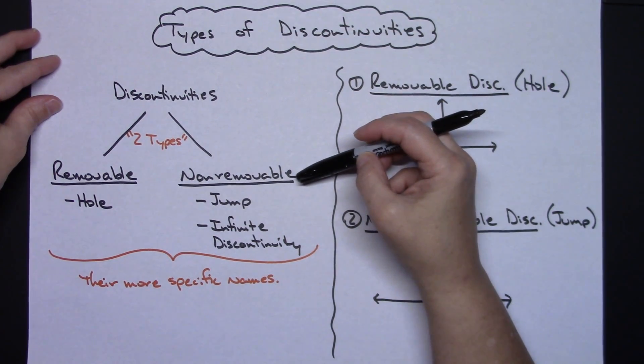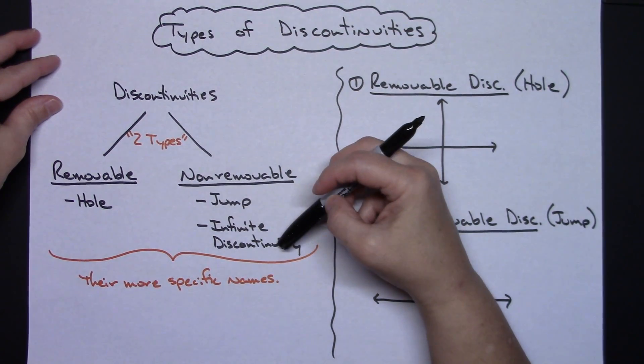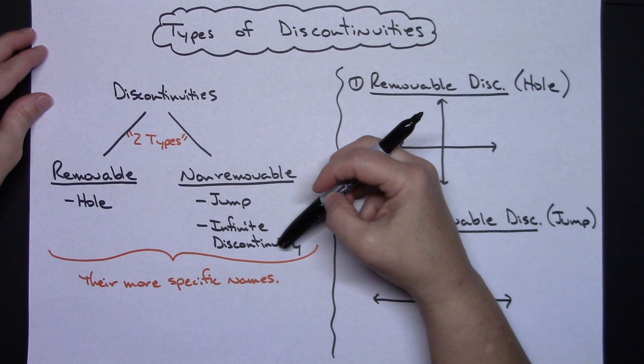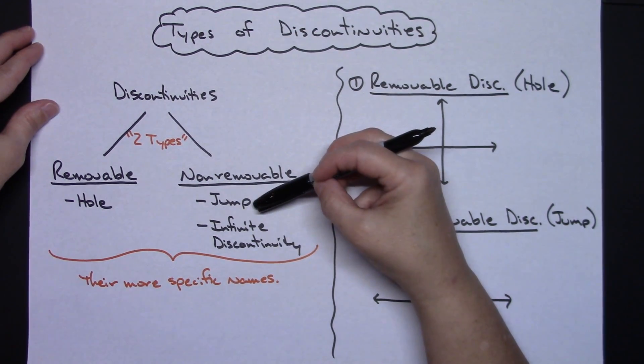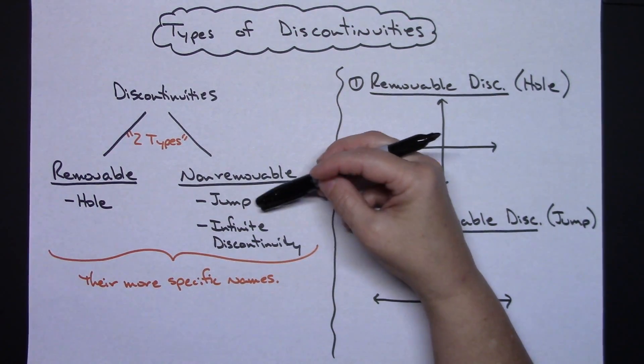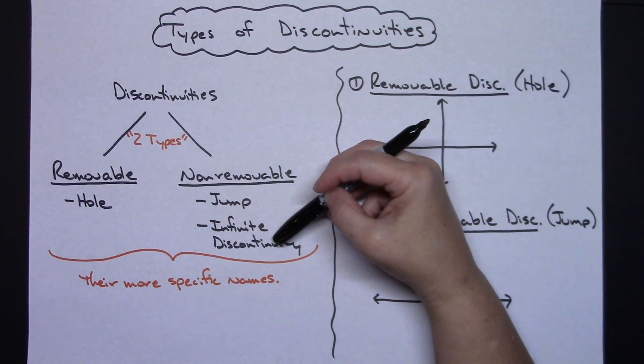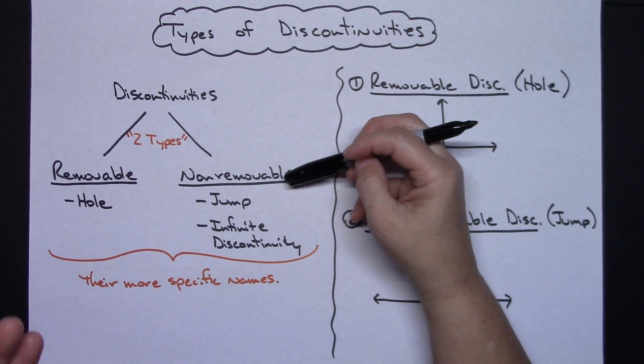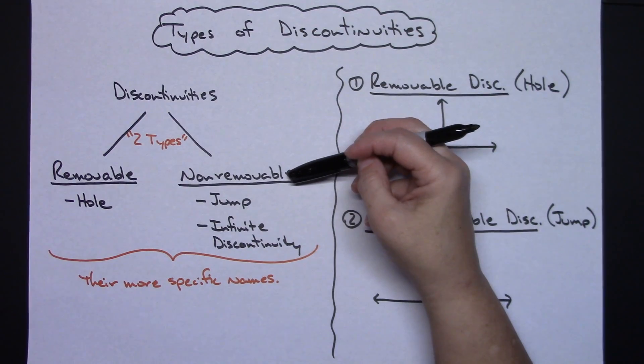Over here on non-removable, you've got two possibilities, two different things that could be going on in the graph that would make it a non-removable discontinuity. It could be a jump, or it could be an infinite discontinuity. These would be more specific names that you could give a description to what's going on in the graph as opposed to just saying a non-removable discontinuity.